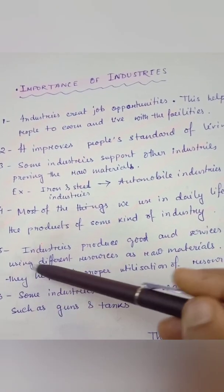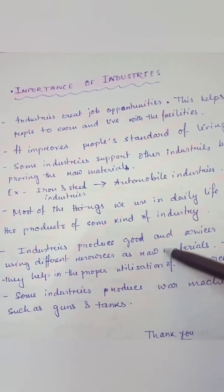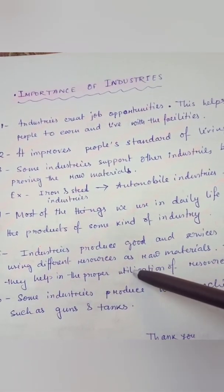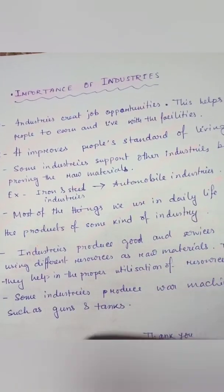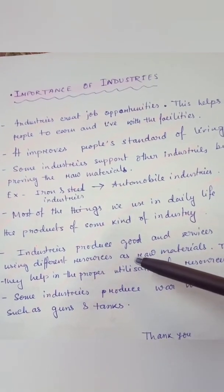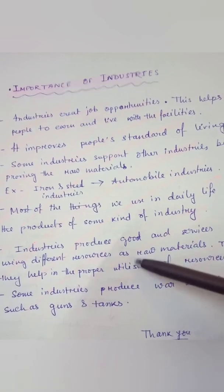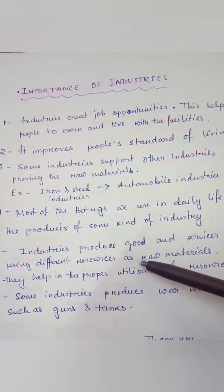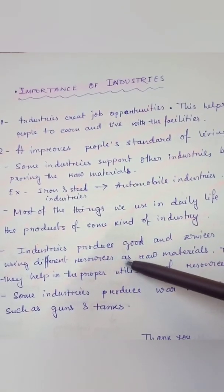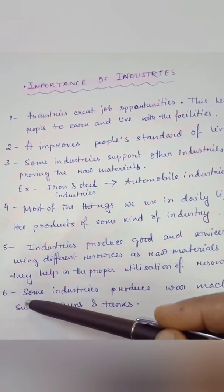Fifth, industries produce goods and services by using different raw materials and fully utilizing the potential of those resources so they are not wasted. For example, milk and vegetables are perishable products that easily get damaged and cannot be stored for a long time. When these products are sent to industries, they are processed, packaged, and then supplied to markets across the country. The finished products can then be stored for a long time and used according to our needs.